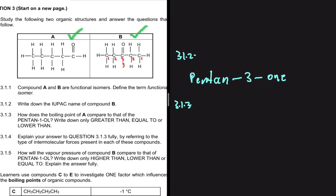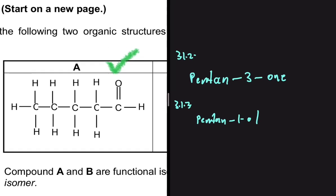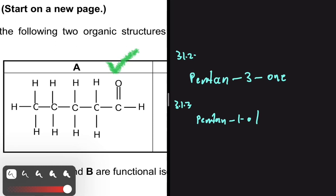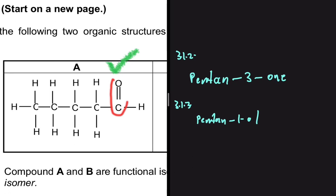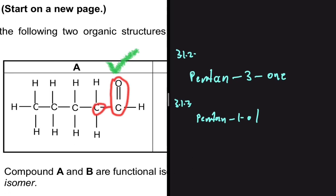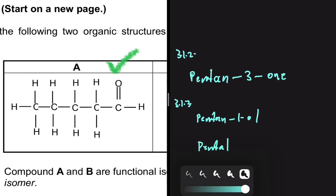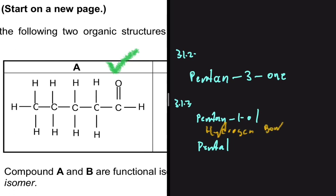For 3.1.3, we compare the boiling point of compound A to that of pentan-1-ol — answer only with greater than, equal to, or lower than. Compound A is an aldehyde because the carbon bonded to the oxygen is only bonded to one other carbon. So we have pentan-1-ol and pentanal. Pentan-1-ol is an alcohol, so it has hydrogen bonding.